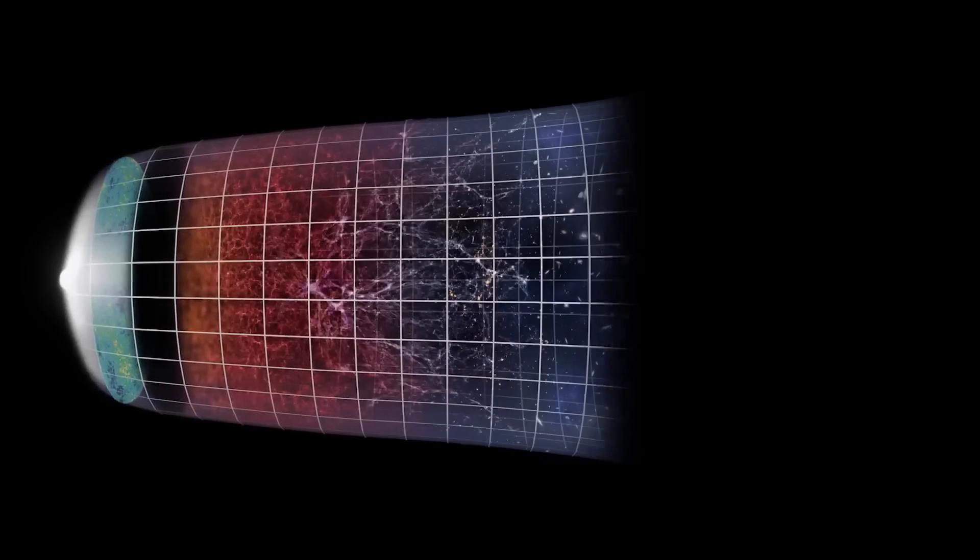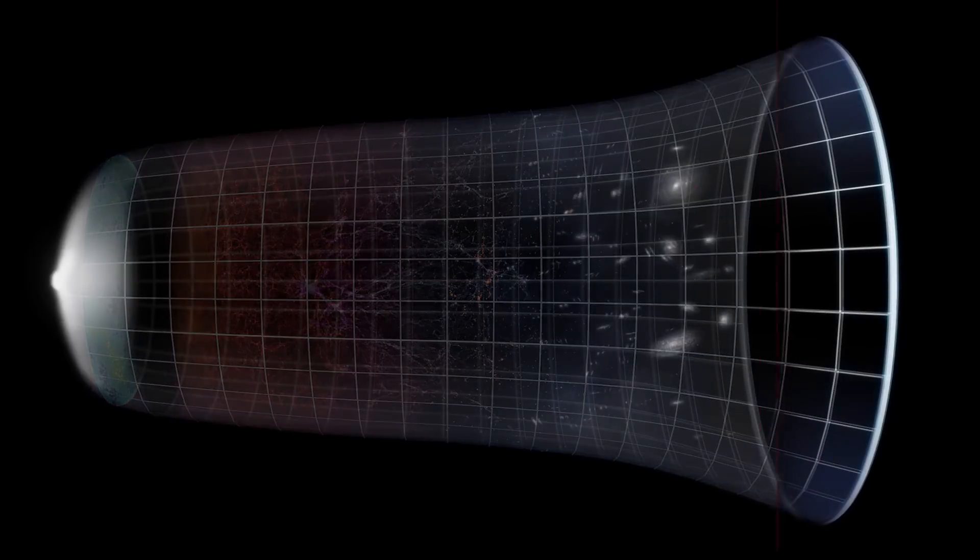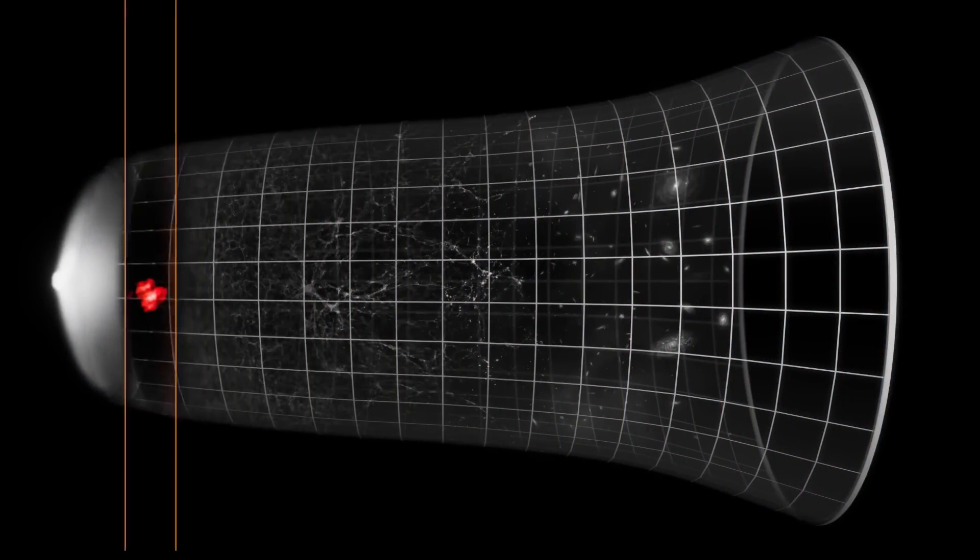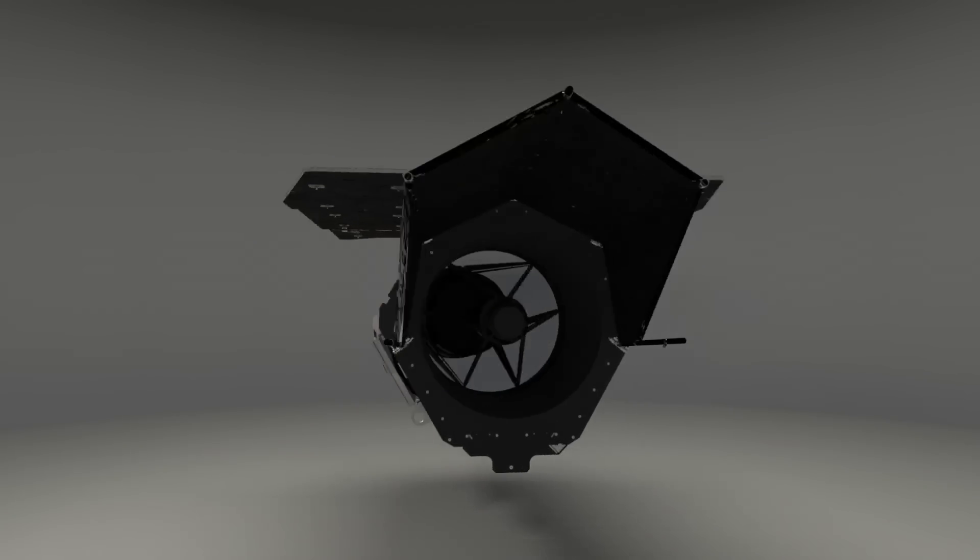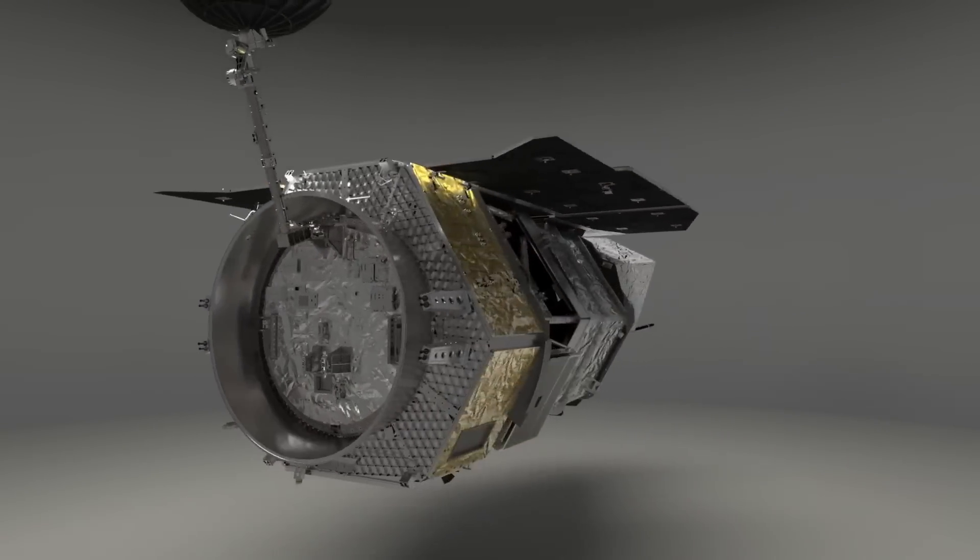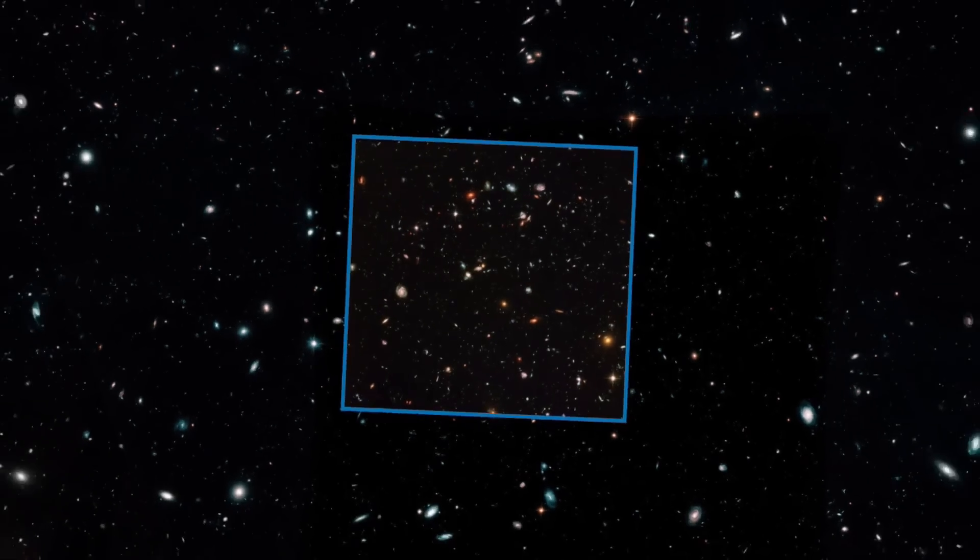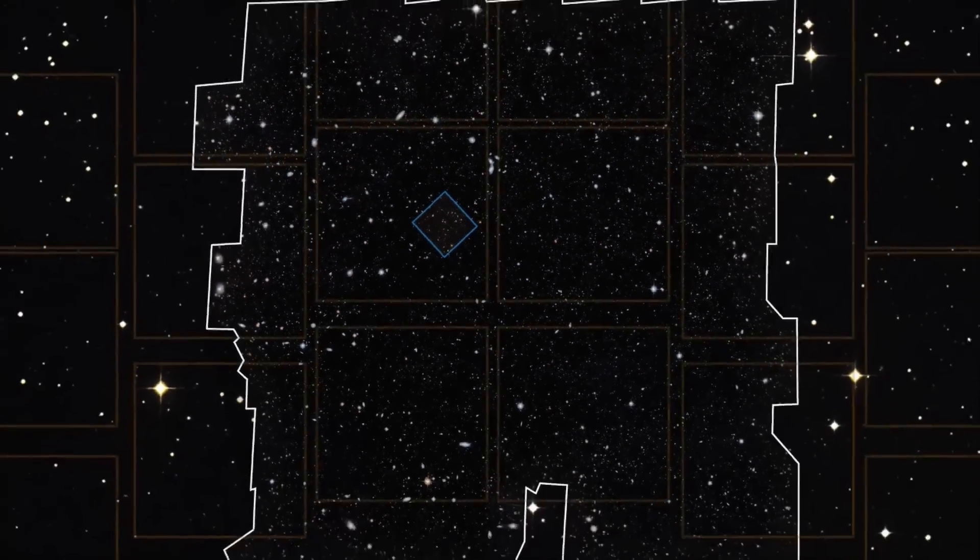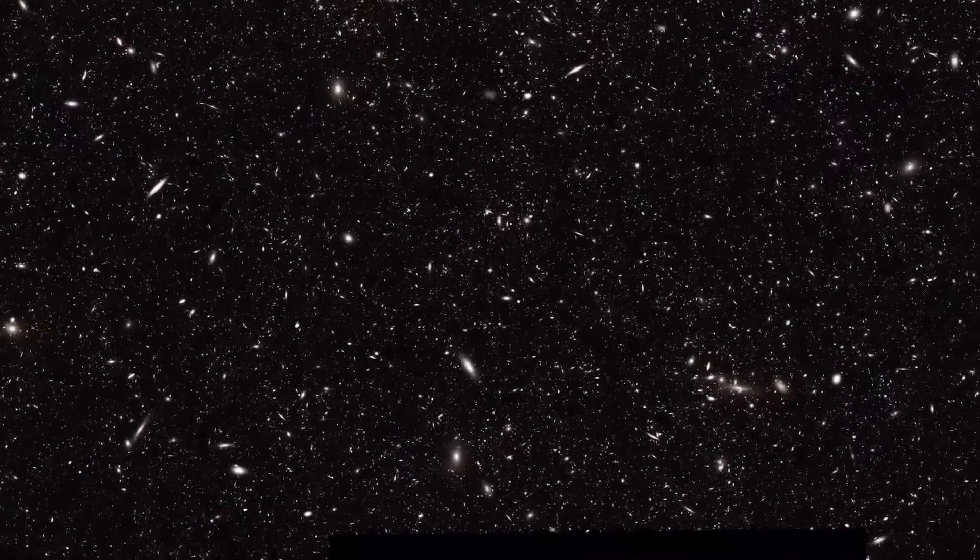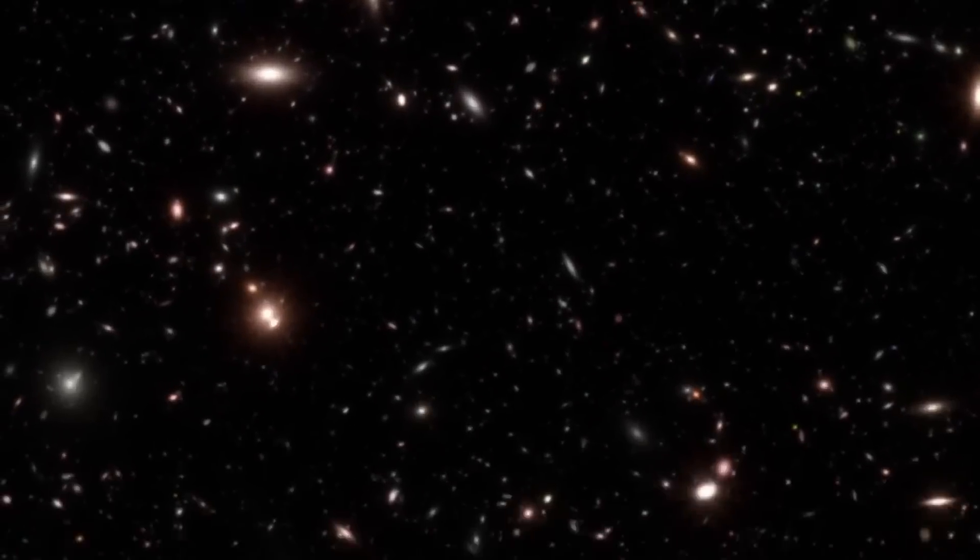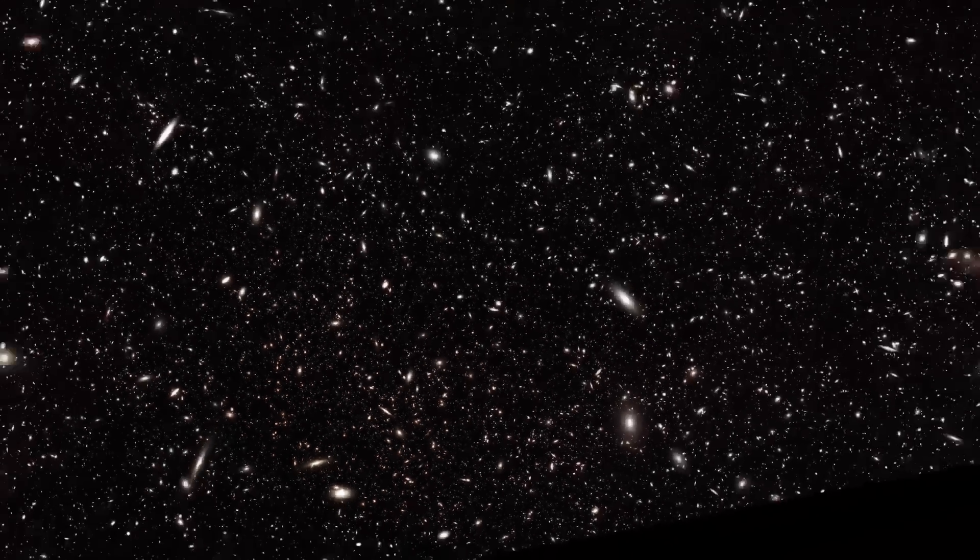It's not that our models are wrong, but they're incomplete. MACS0647-JD is a clue that the early universe might have been far more active than we imagined. And this is just the beginning. Later this decade, the Nancy Grace Roman Space Telescope will join JWST in scanning the early universe. Roman will cover much larger areas of sky with incredible detail. Together, these telescopes could uncover hundreds, maybe thousands of galaxies, like MACS0647-JD. Each one a time capsule, from an era we're only beginning to understand.